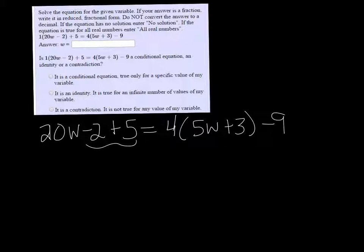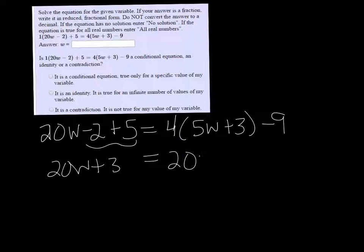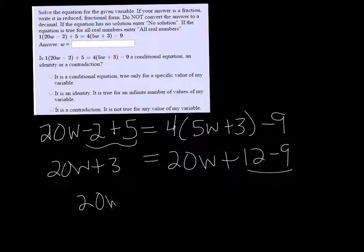Combining like terms over on this side, I get 20w plus 3. Distributing on the other side, I get 20w plus 12 minus 9. 12 minus 9 is 3, so both sides end up being exactly the same, 20w plus 3.